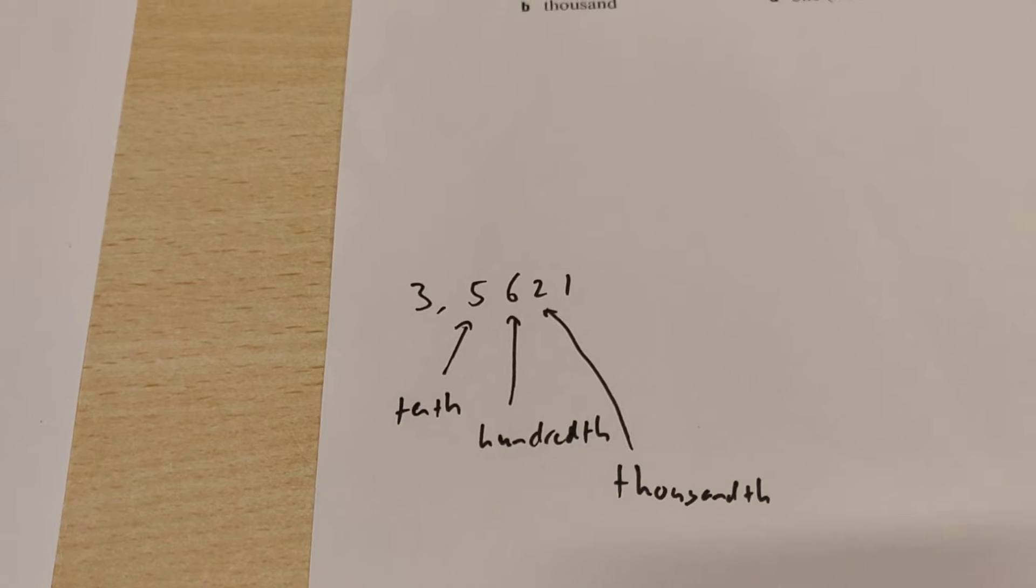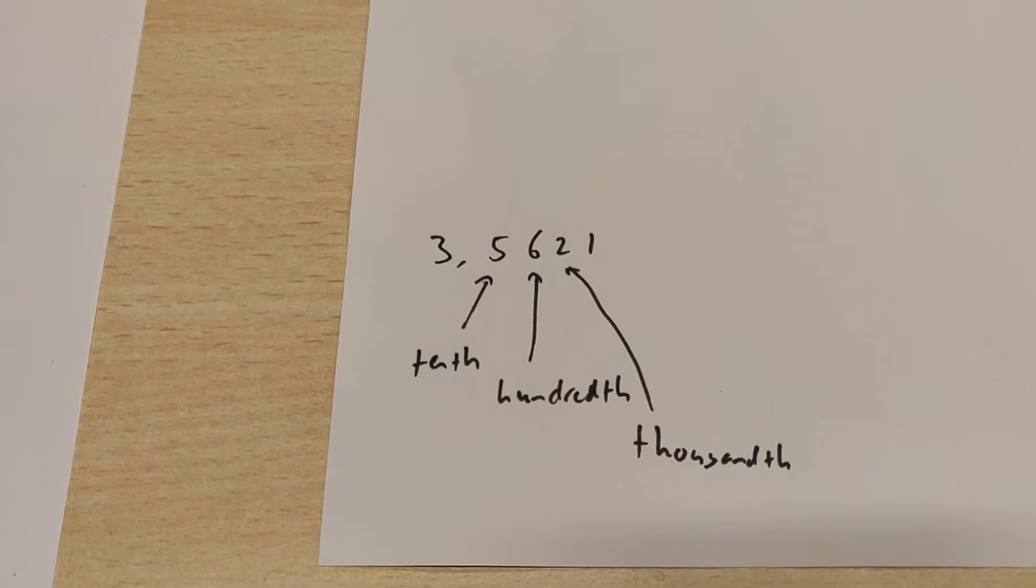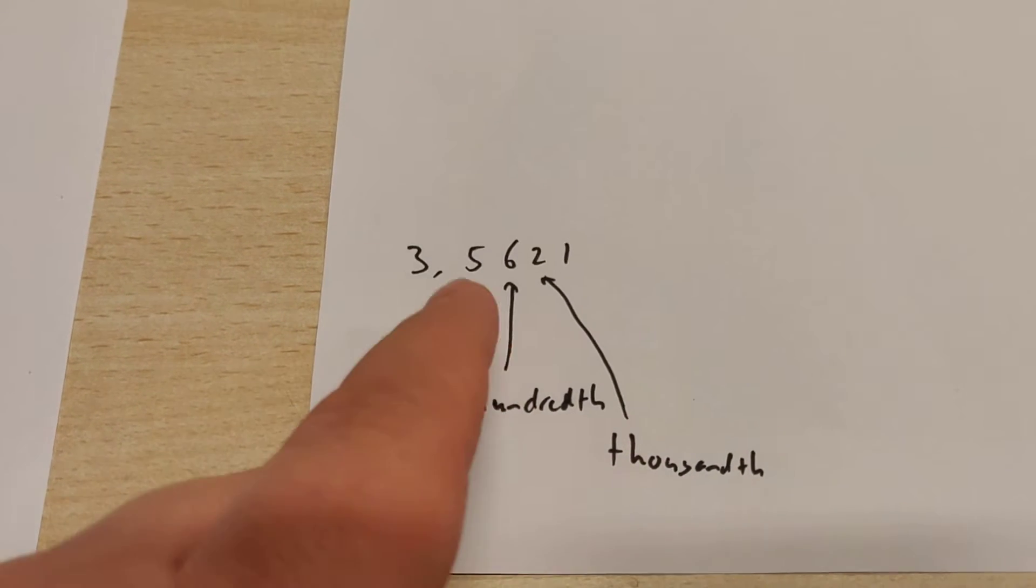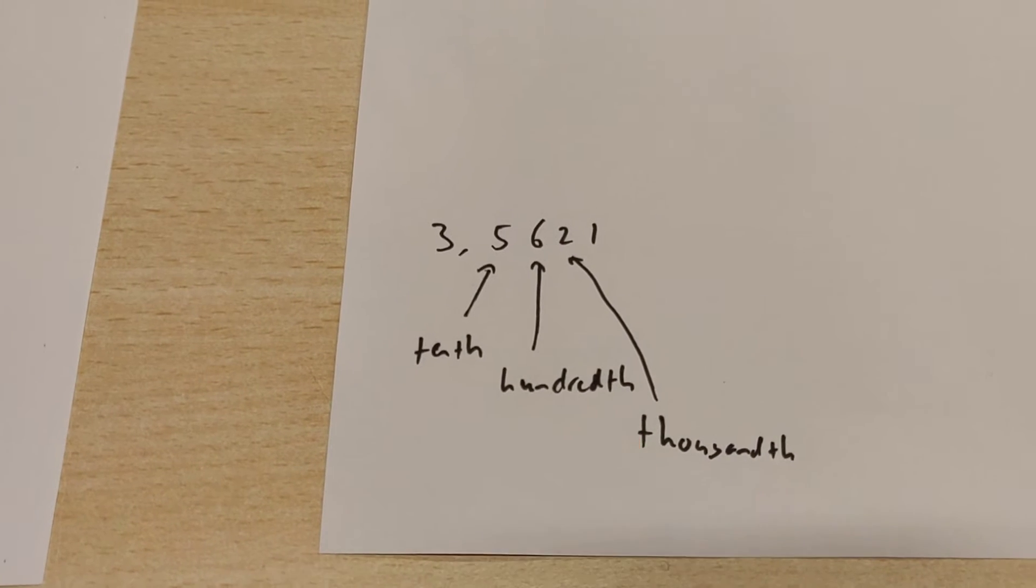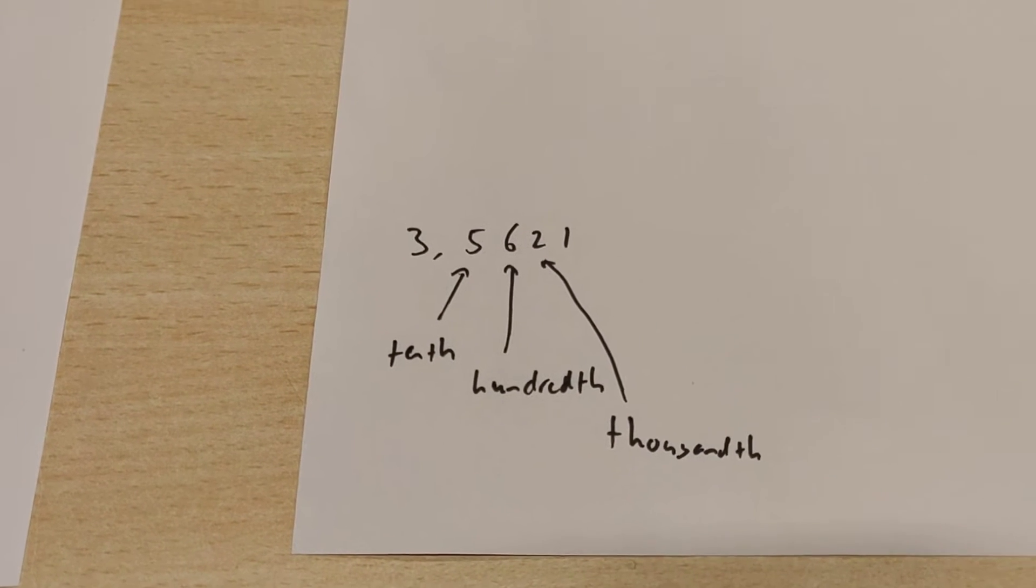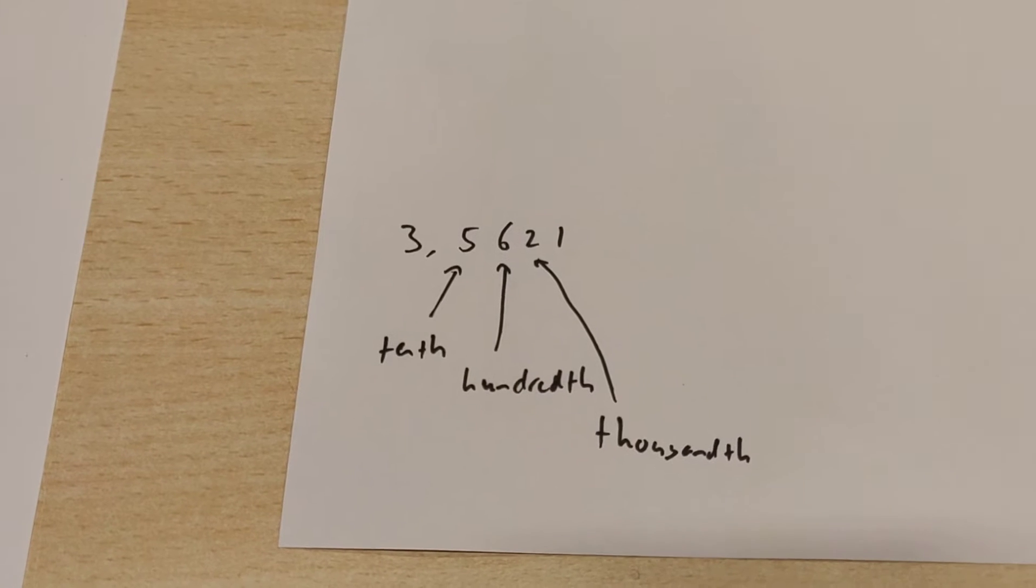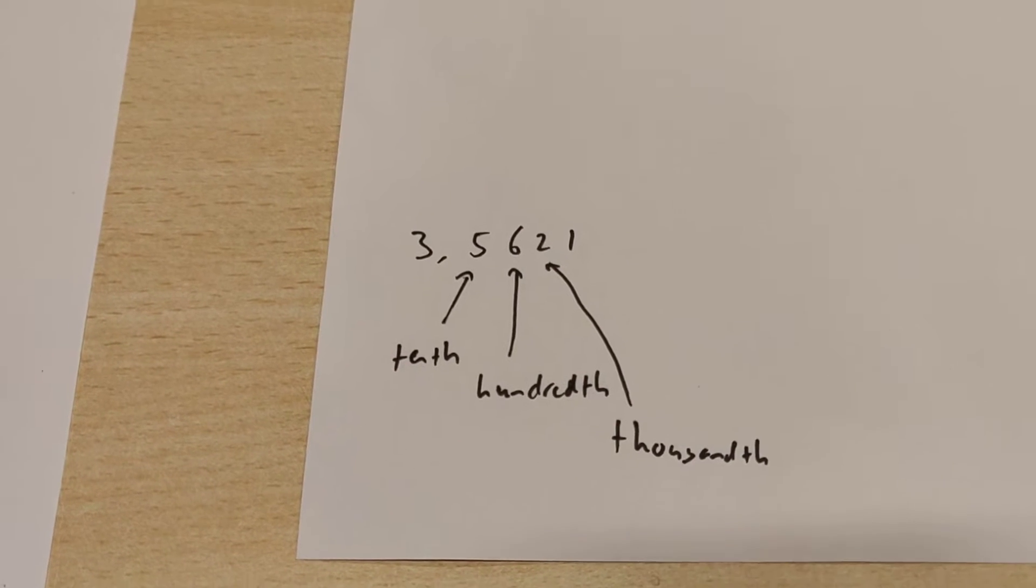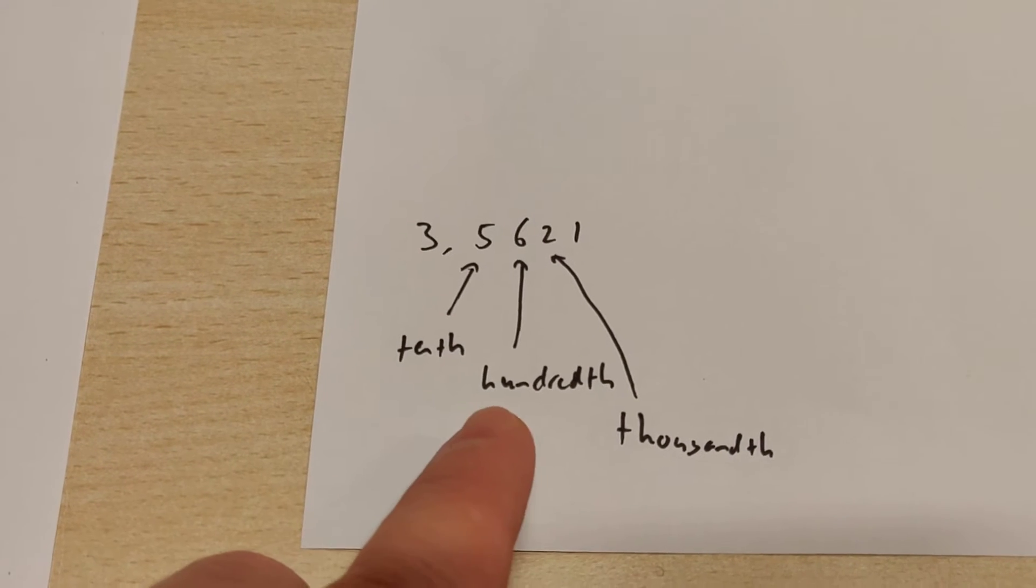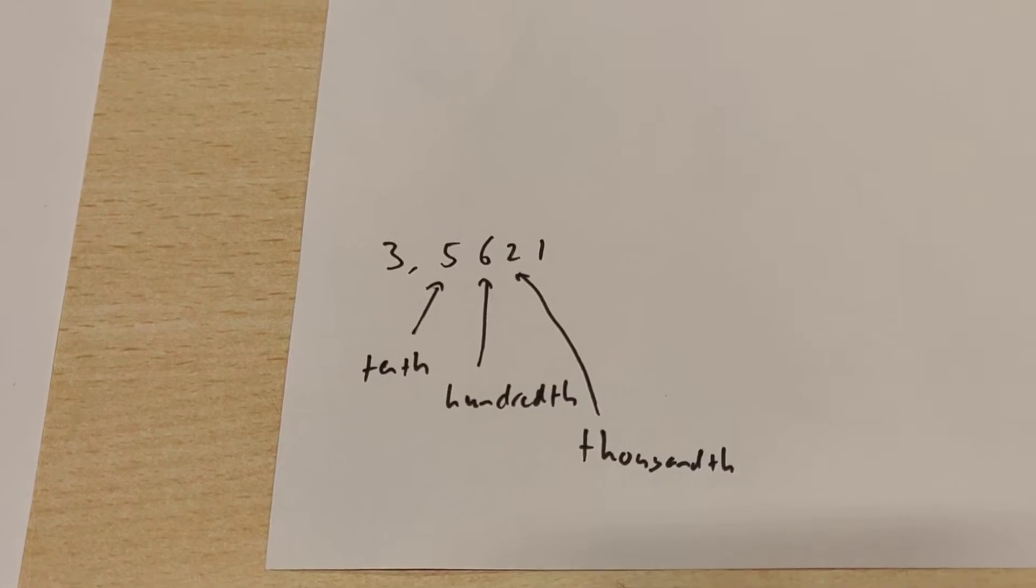So over here I wrote down a random number. And what tenth actually means is one out of ten. So it's like the first number behind the point. The second one are the hundredths, the second decimal place. The thousandths are the third decimal place. So in Dutch this would be 1 tiende, 1 honderdste and 1 duizendste. But in this case you have 2 duizendste. And that's how that works.